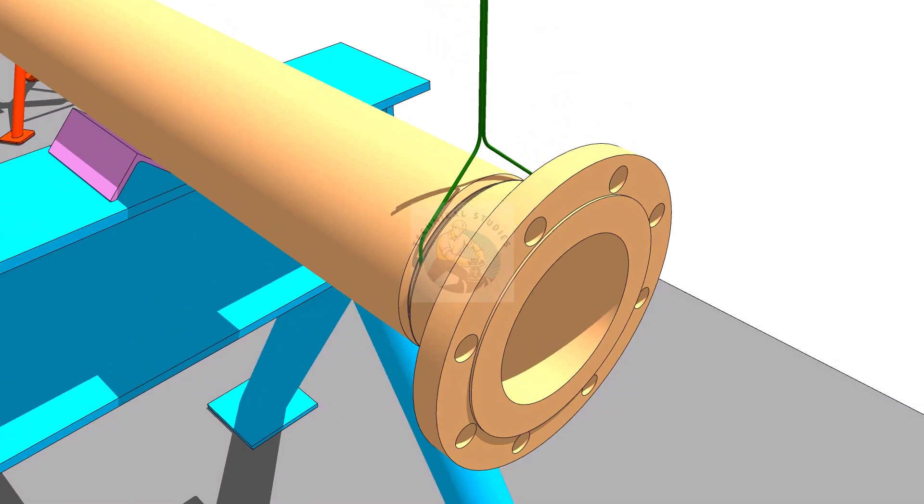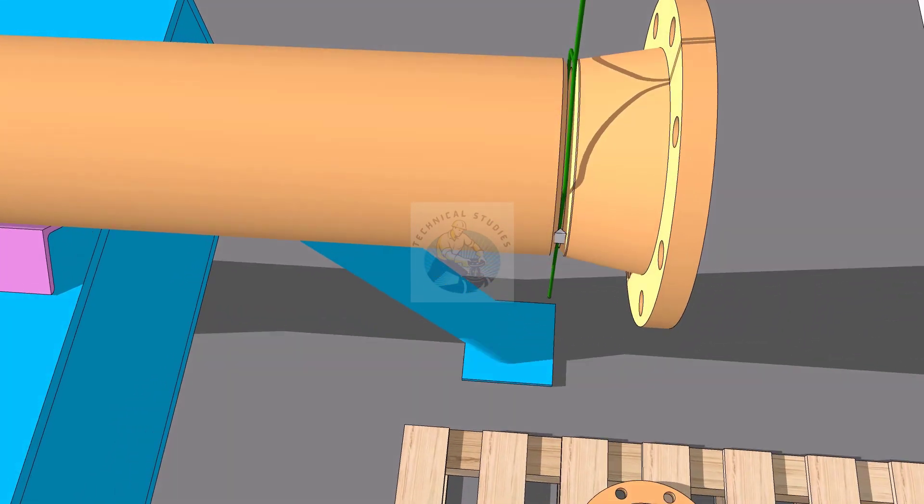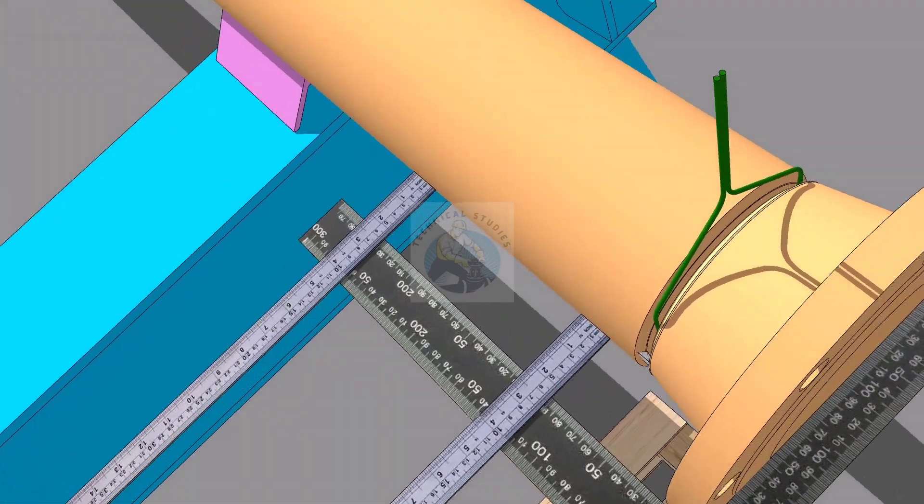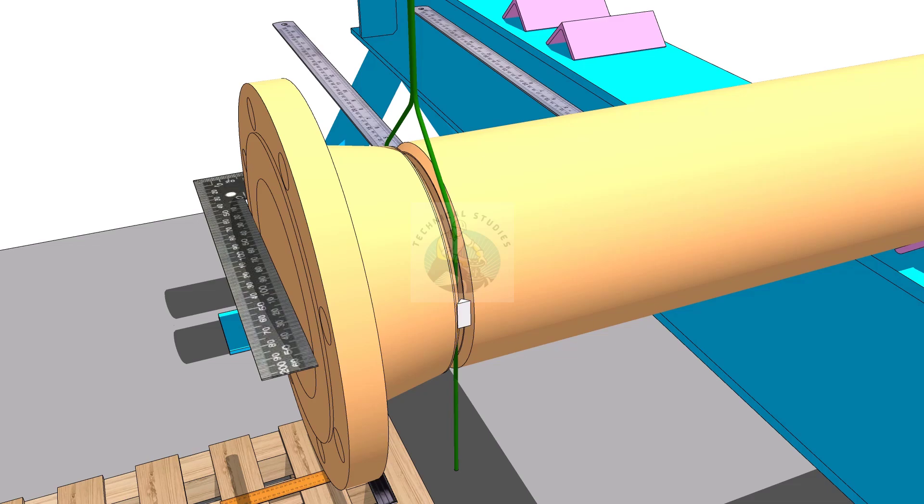Tack weld at the left side of the joint. Check the squareness of the flange face to the pipe side, and if correct, tack weld on the right side of the joint.